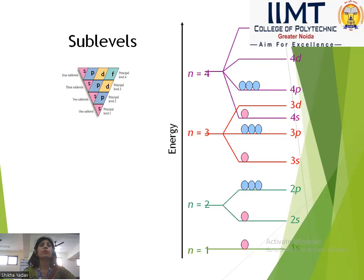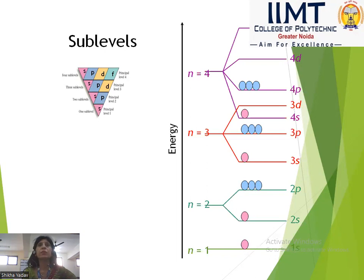For n=1, 1s has 1 orbital. In 2s we have 1 orbital, and 2p has 3 orbitals. For n=3: 3s has 1 orbital, 3p has 3 orbitals, and 3d has 5 orbitals.